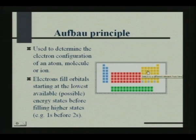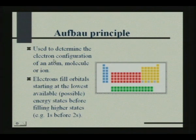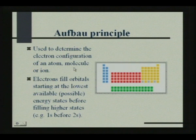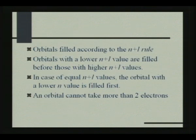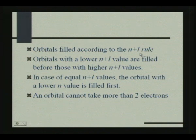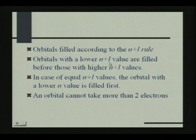What is the Aufbau principle? It is used to determine the electronic configuration of an atom, molecule, or ion. In this principle, electrons fill orbitals starting at the lowest level possible — that is, 1s before 2s. Orbitals are filled according to the n+l rule. Here, n is the principal quantum number and l is the azimuthal quantum number. Orbitals with a lower n+l value are filled before those with higher n+l values.